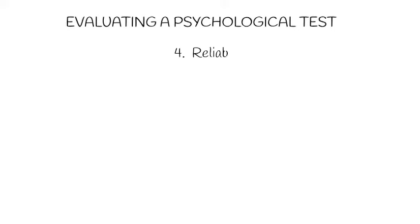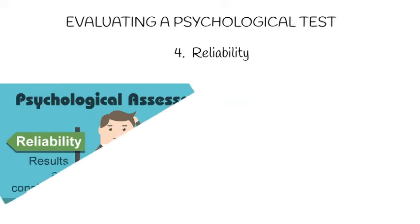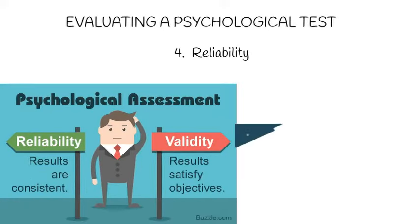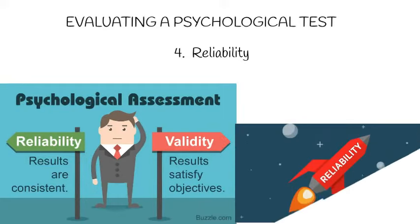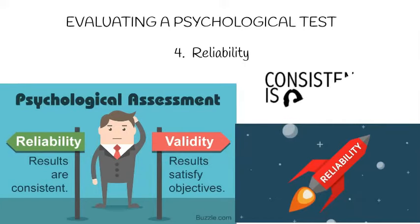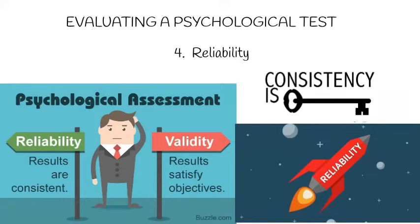Another important thing to consider in evaluating a psychological test is its reliability. The reliability of a test refers to its degree of stability, consistency, and predictability. It addresses the extent to which scores obtained by a person are or would be the same if the person is re-examined by the same test on different occasions. Reliability will be discussed in more detail in another video.